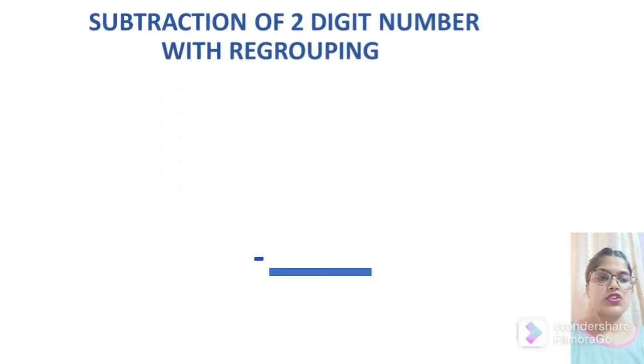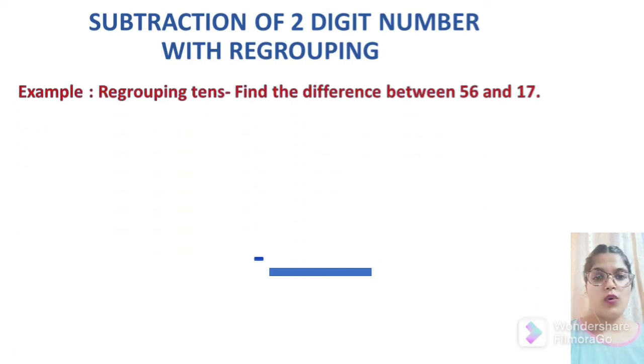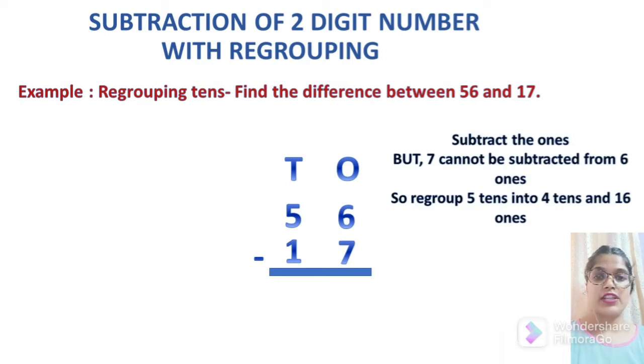Now, we will see subtraction of two digit number with regrouping. Regrouping simply means we take borrow in case a number is smaller. We will find difference of these two numbers. Before that, let's give heading of ones and tens. In 56, you can easily make out 6 will come under ones column and 5 under tens column. In number 17, we can easily find that 7 will come under ones column and 1 under tens column. As you can see, 6 is smaller than 7 that means 7 cannot be subtracted from 6. So what we will do, we will regroup 5 tens into 4 tens and 16 ones.